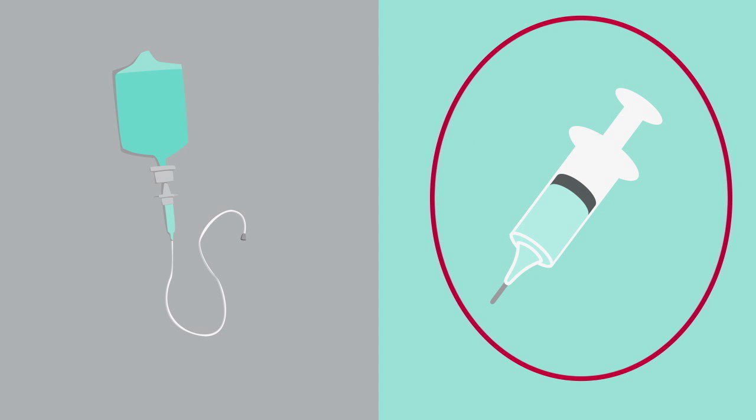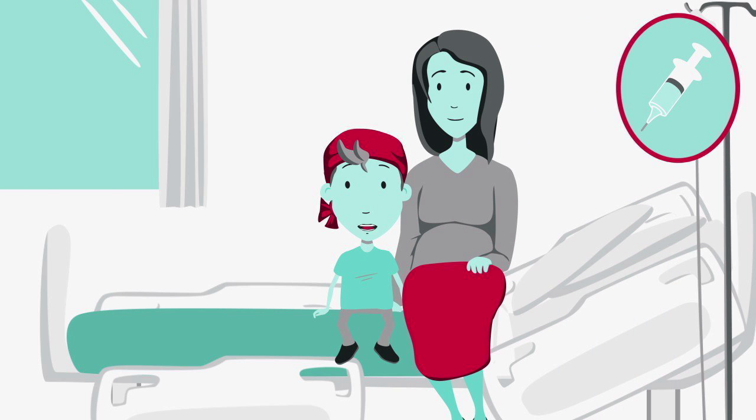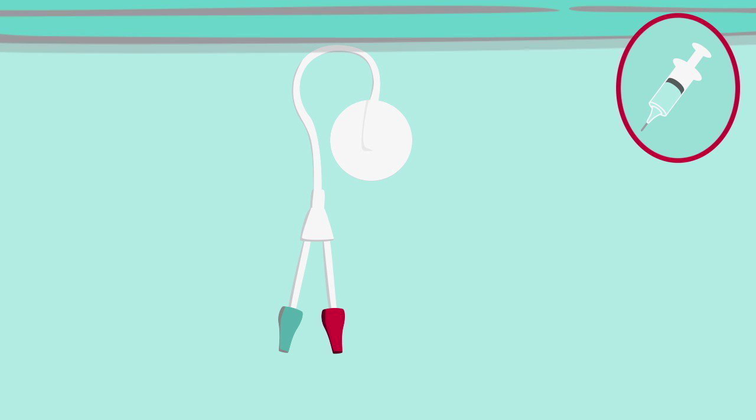For an injection, you need a tiny tube put in called a line or a wiggly. That's what my doctor calls it. To get a wiggly, you go to hospital. The nurse gives you a medicine. It makes you fall asleep. And when you wake up, you'll have a wiggly. There are different types of wiggly. I've got a central line. Do you want to see? Yes, okay. The wiggly stays in me, even when I'm not at hospital.